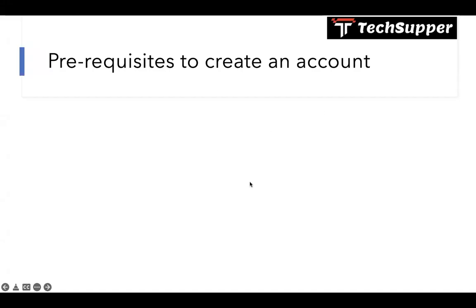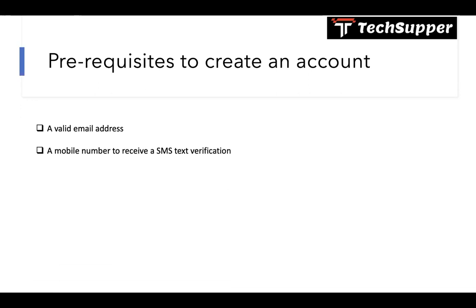Before we create the account, let's look at the prerequisites. You must have a valid email address which you have not used earlier to create an account. You should have a mobile number to receive an SMS text verification. You also need a credit card — you enter your credit card details just for verification purposes. Oracle will hold a nominal charge, like one dollar or around 70 rupees, for verification.